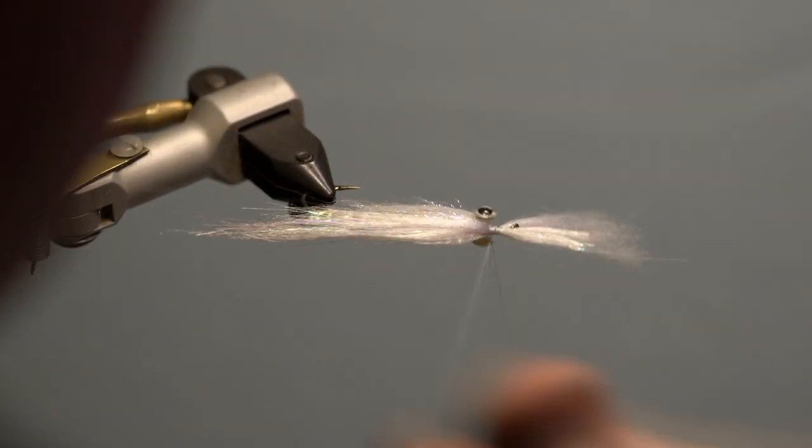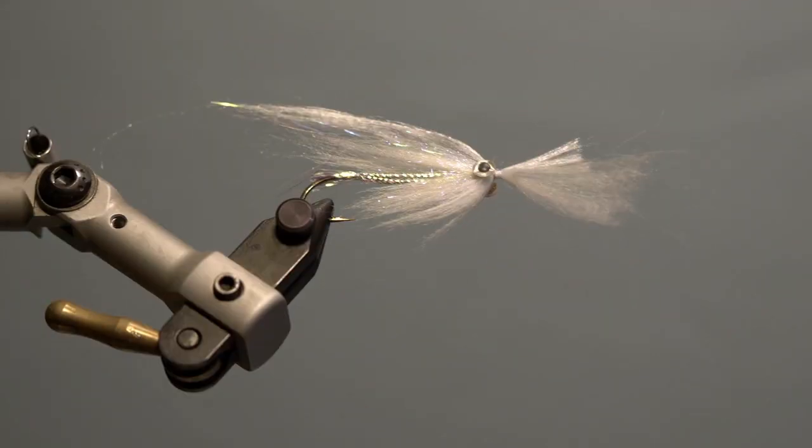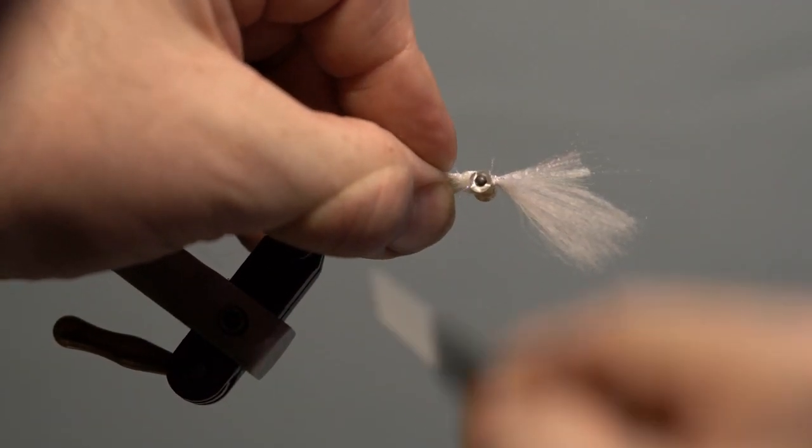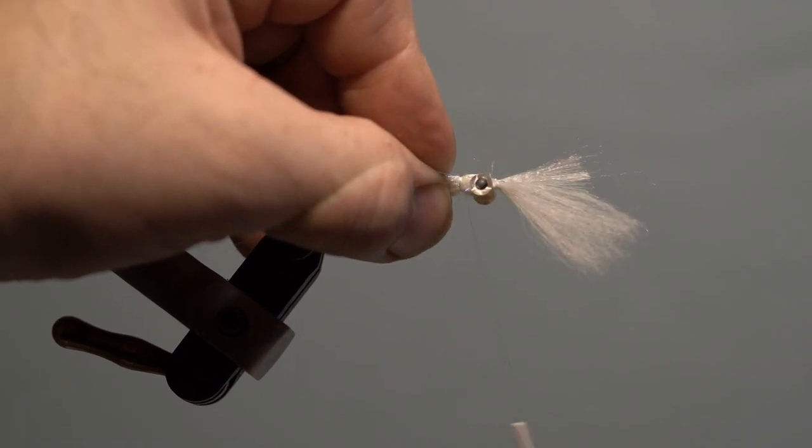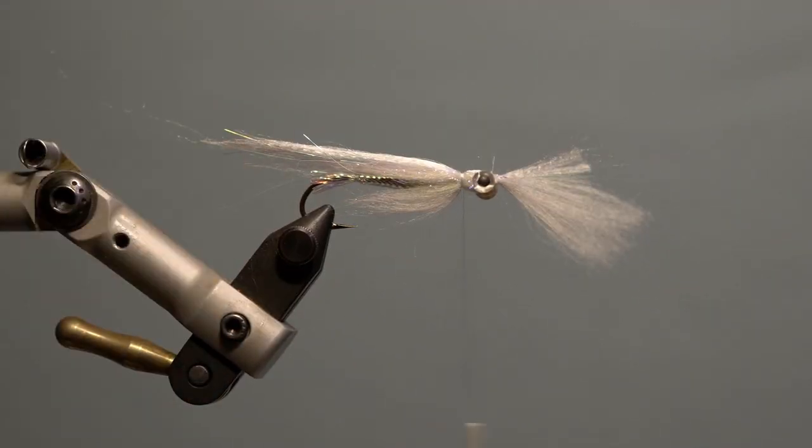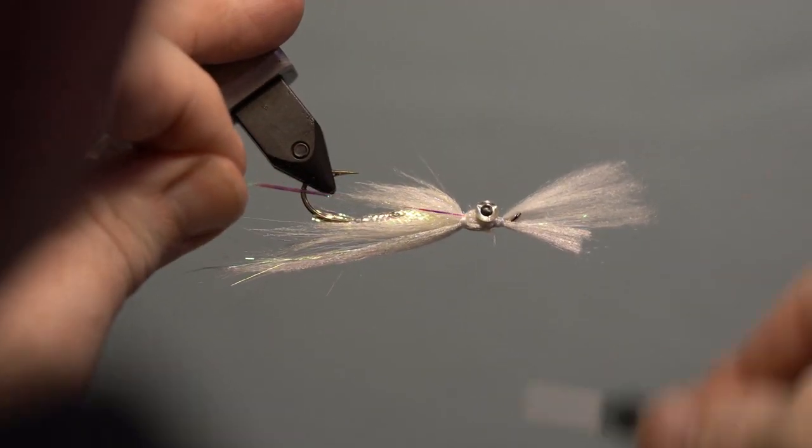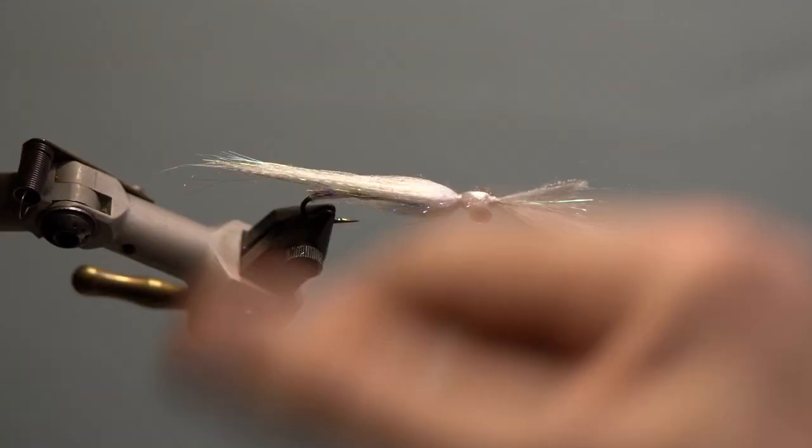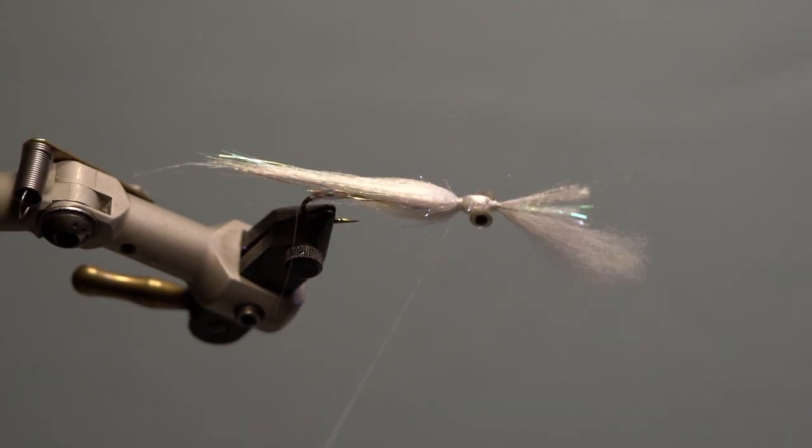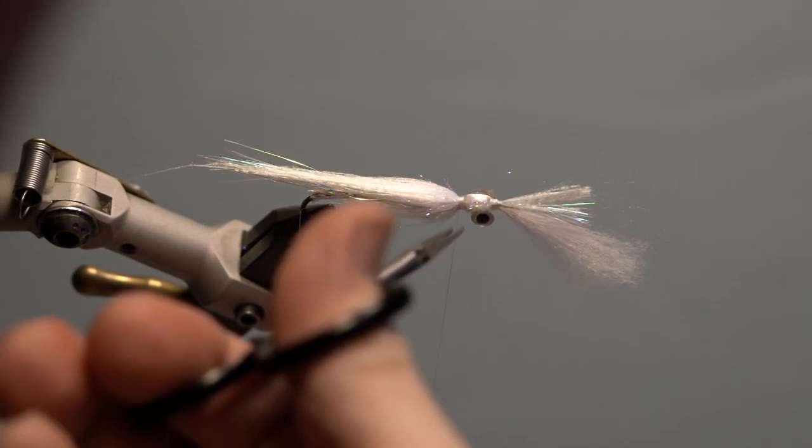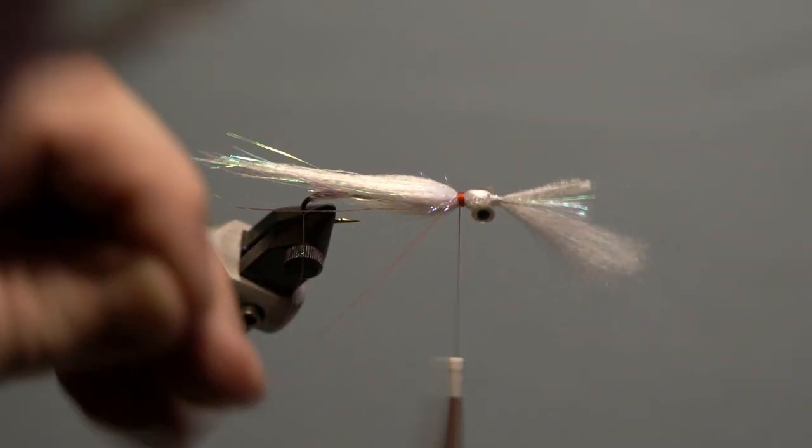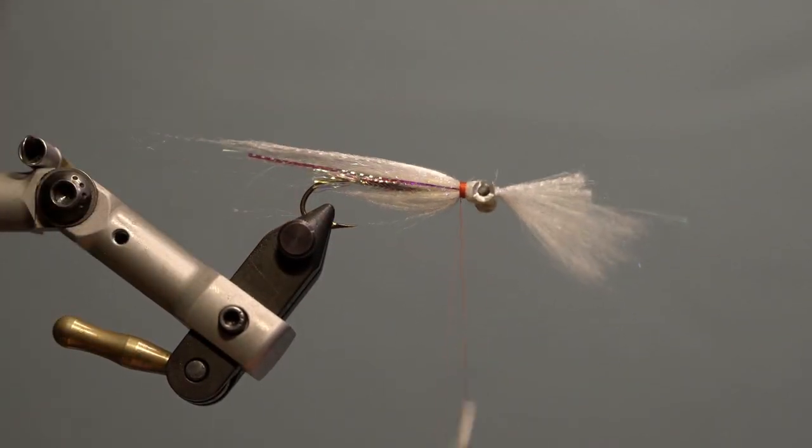Pull the fibers back both top and bottom using the same thread. Secure both together slightly behind the eyes. Wrap about a dozen or so wraps and trim the tag. Next, take two strands of pearl flashaboo, fold it over the thread and secure. Trim the excess even with the longest part of the wing. Repeat the same step on the opposite side. Secure, whip finish and trim.